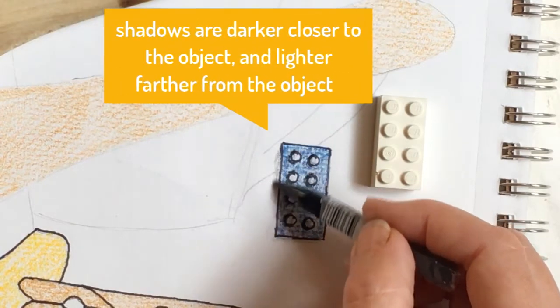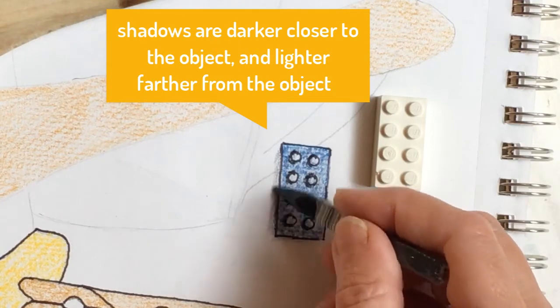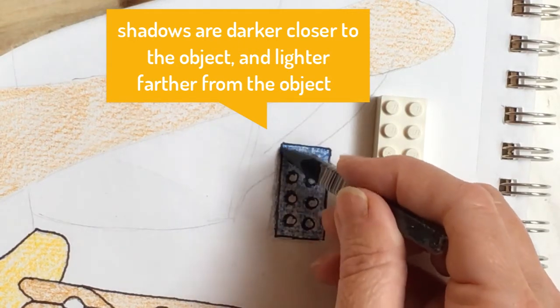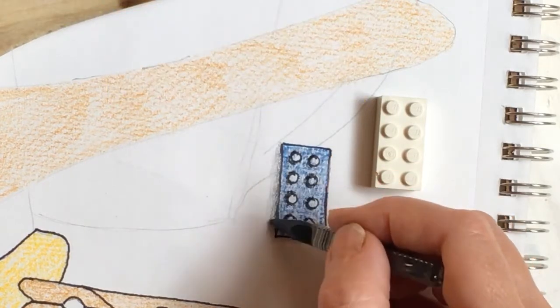Shadows are darker, closer to the object. See if you can make the shadow lighter as it comes away from the object. This takes a lot of practice. So no worries if your shadow is all one color.